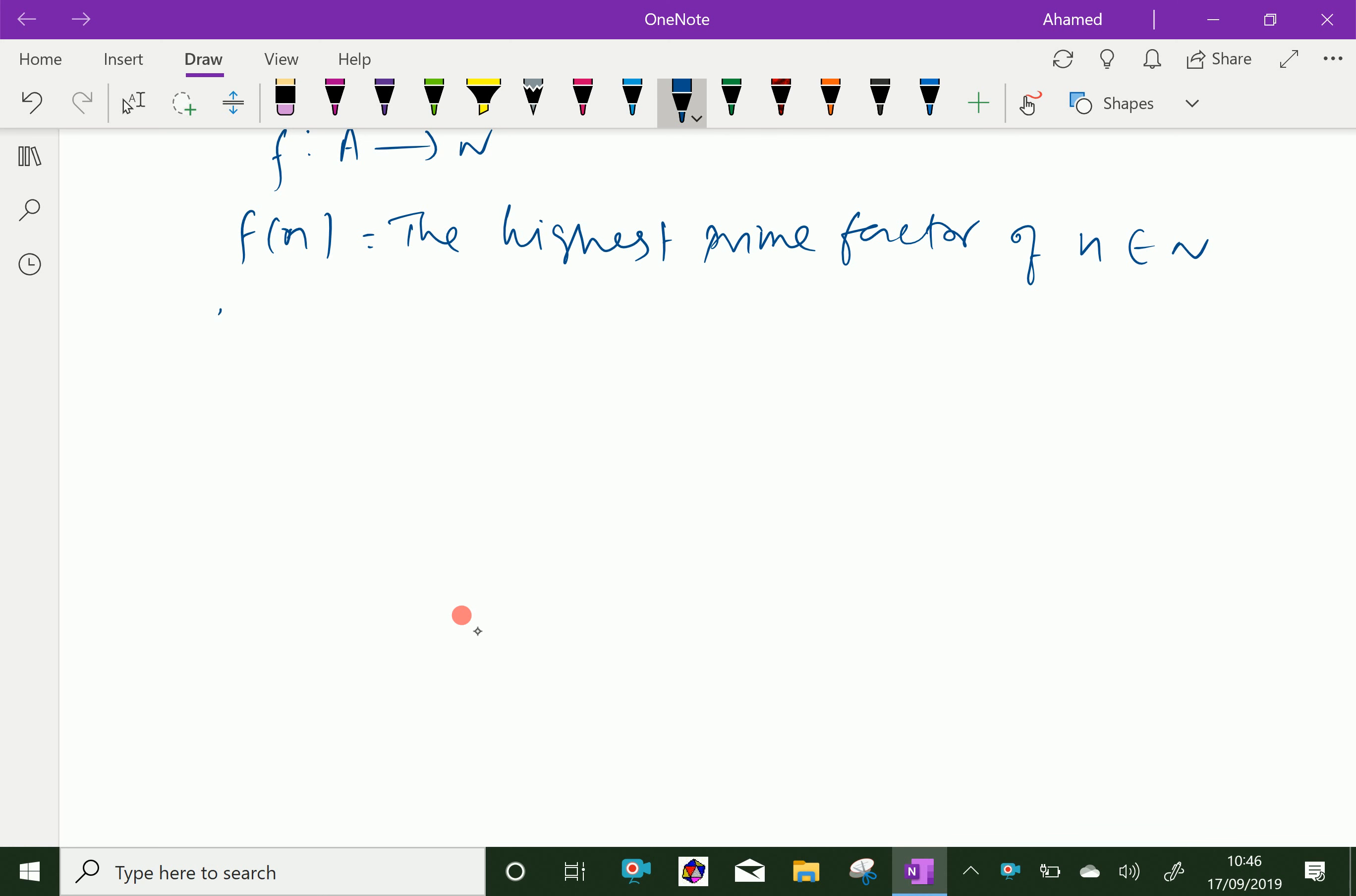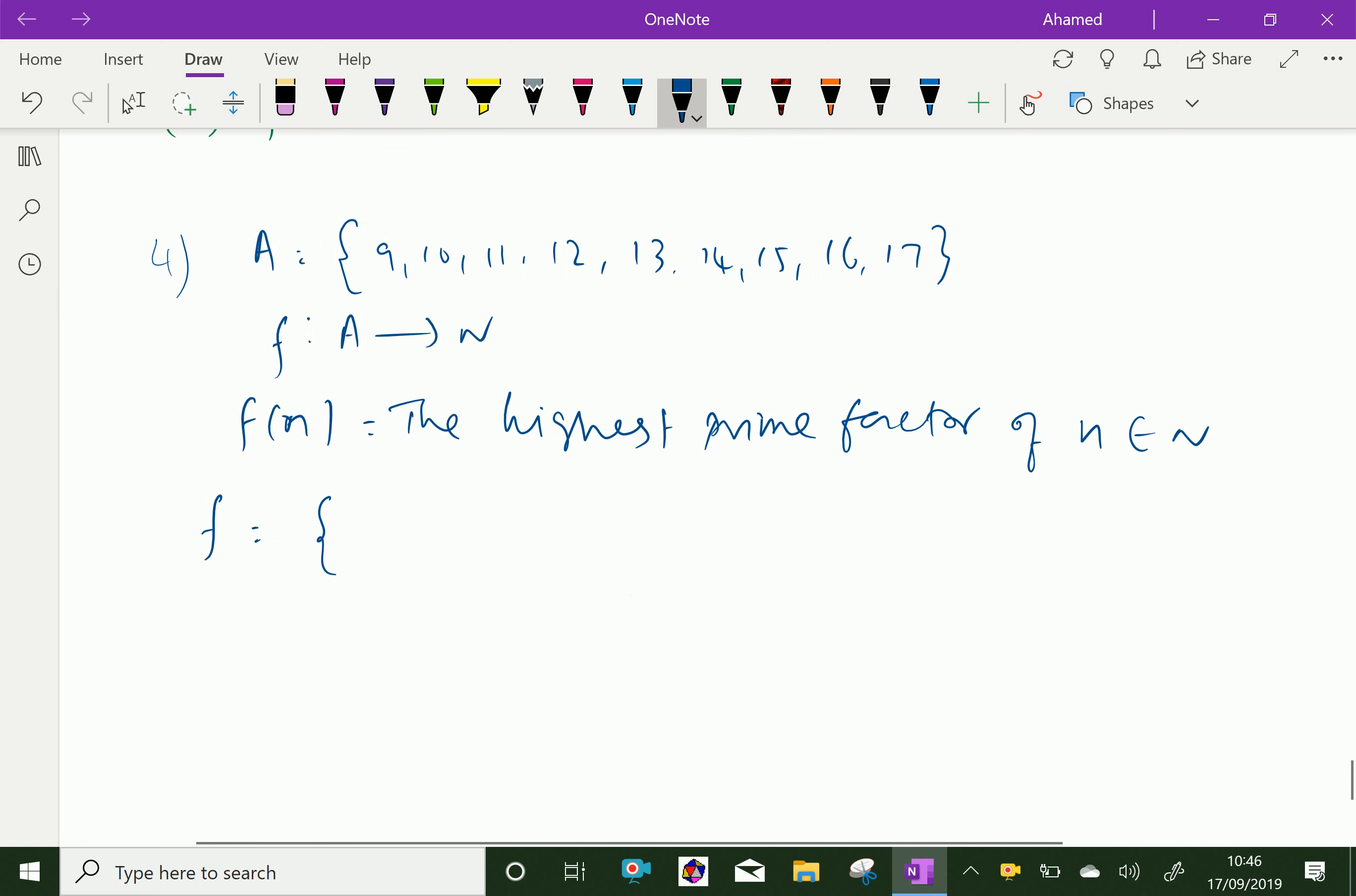Therefore, the function f, we can write f from A to N where f is the highest prime factor of n. For 9, the highest prime factor is 3. For 10, the highest prime factor is 5.